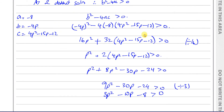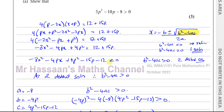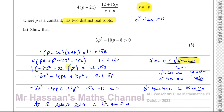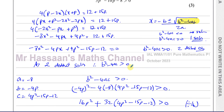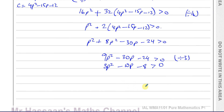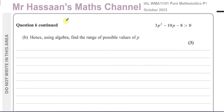That gives us exactly 3p² minus 10p minus 8 greater than zero, which is what we had to prove. The key was: rearrange the equation into the quadratic form ax² plus bx plus c equals zero, take the discriminant, set it greater than zero, and simplify to get the required inequality. That completes Part a.